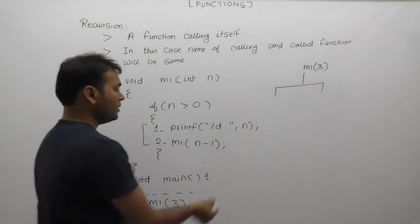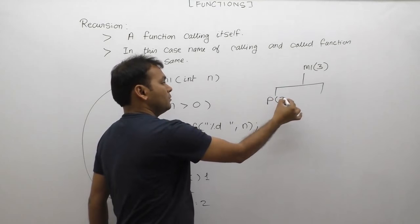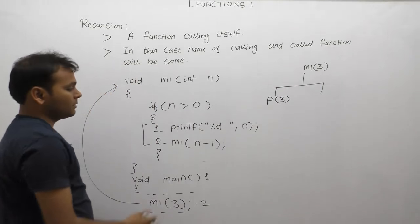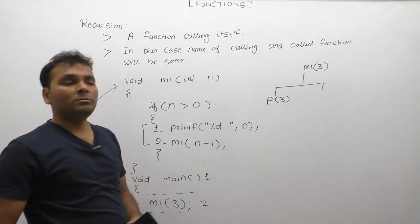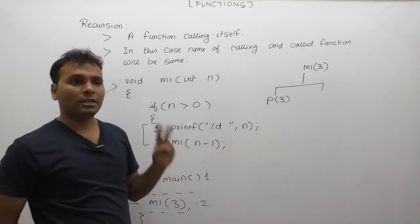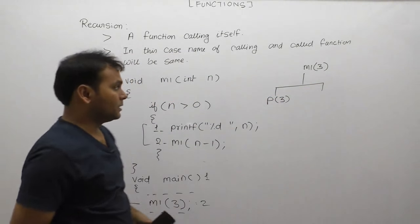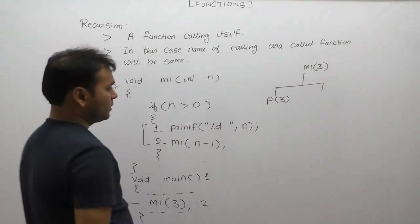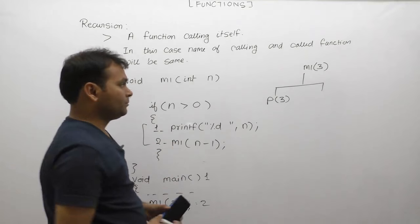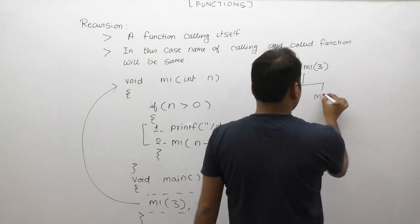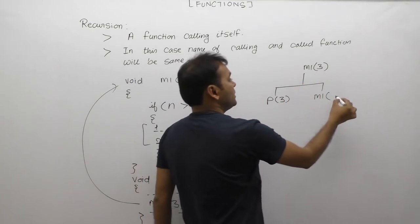According to the binary tree, the first case is print tab: print tab is passed n, and n's value is currently 3, so print tab displays 3. Then the next case is again calling m1. This is represented with two directions in the binary tree. m1 is called with n-1: n's value is 3, so 3-1 is 2. We have the m1(2) branch.